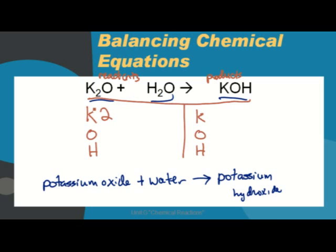There are two potassium. We know that by the subscript. There are two oxygens, one in potassium oxide and one in water, and there are two hydrogens in water. Now on the product side, we have one potassium, one oxygen, and one hydrogen, all in potassium hydroxide.